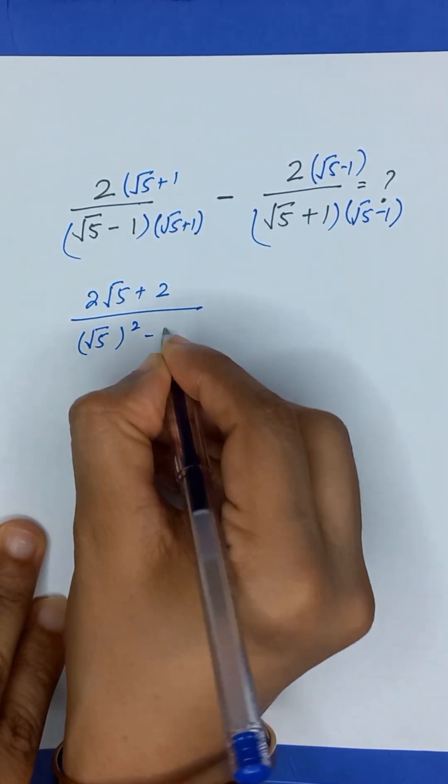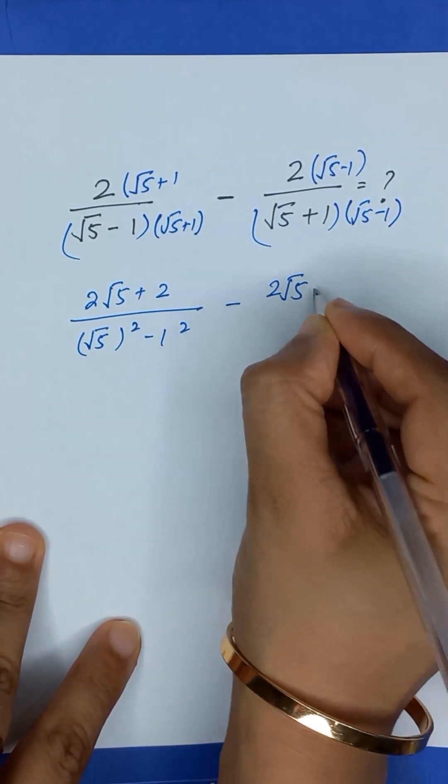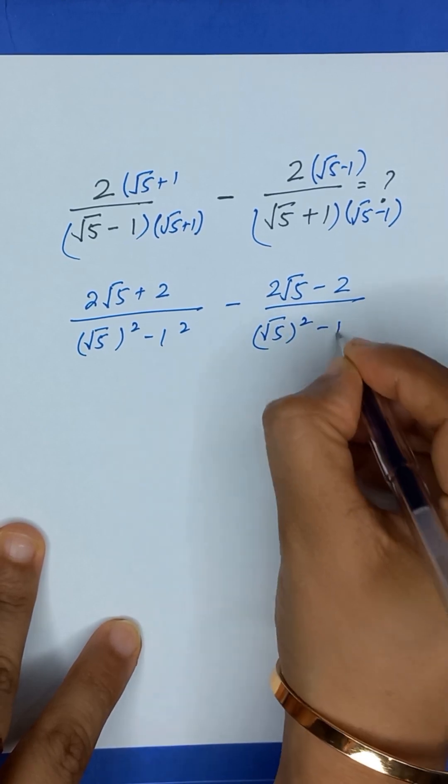So it will become square root of 5 square minus 1 square, minus 2 times square root of 5 minus 2, divided by square root of 5 square minus 1 square.